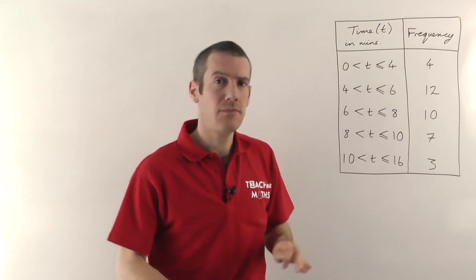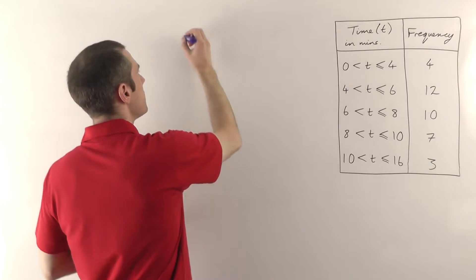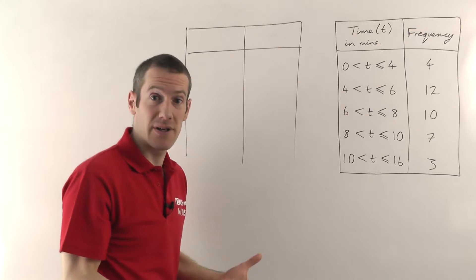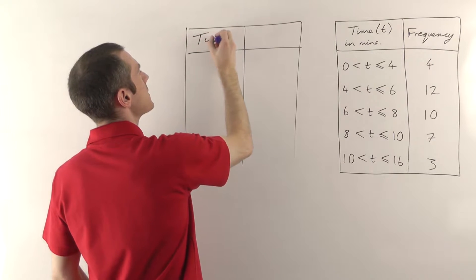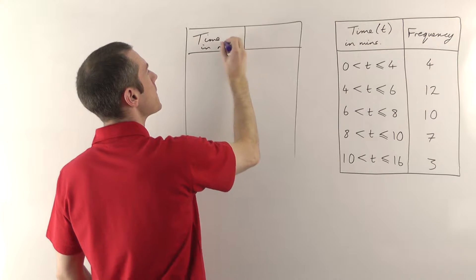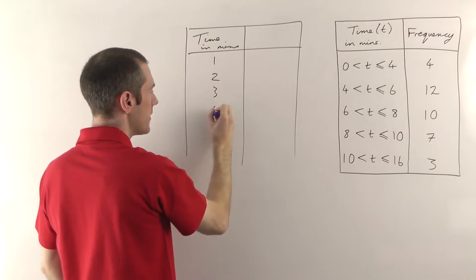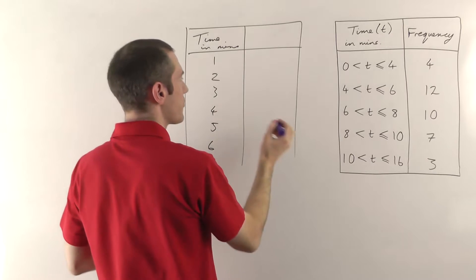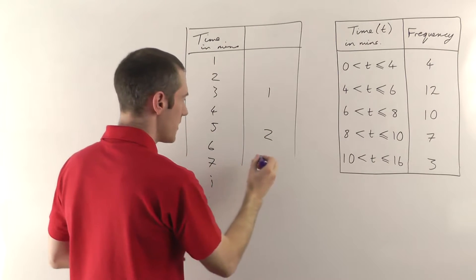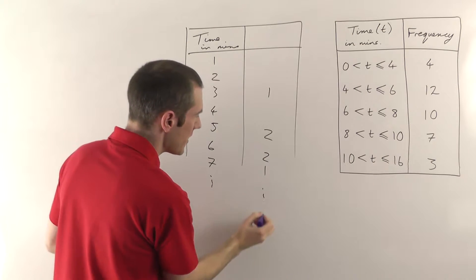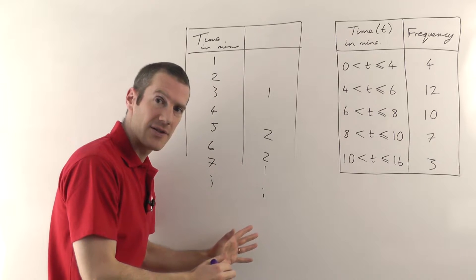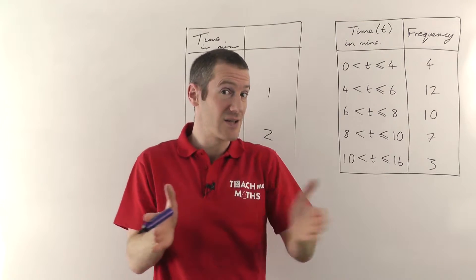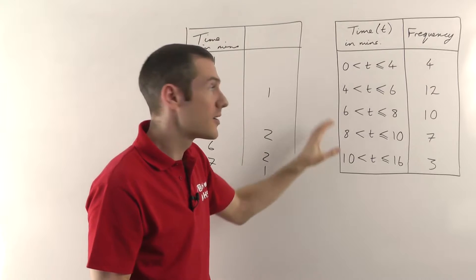Now this is grouped data. What you wouldn't want to do is imagine we had a table where we just listed all of the different possible numbers of minutes it took them to complete the questionnaire — so time in minutes: one, two, three, four, five, six, etc. Then you might find one person was very quick and took three minutes, a couple took five minutes, a couple more took six minutes, one person took seven minutes, and you'd end up with all the different frequencies very spread out. Because it's continuous data — because we're dealing with time, which is on a continuous scale — you're much better off grouping the data, which is what we've done here.